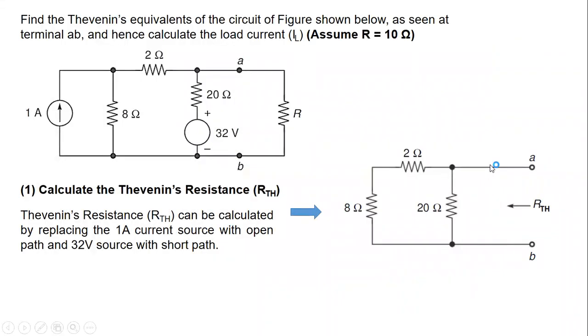Let us consider one electric network shown here. In this network, we are asked to obtain the Thévenin's equivalent and then calculate the load current by assuming the value of R, which is given here as 10 ohm. This is our load resistance.